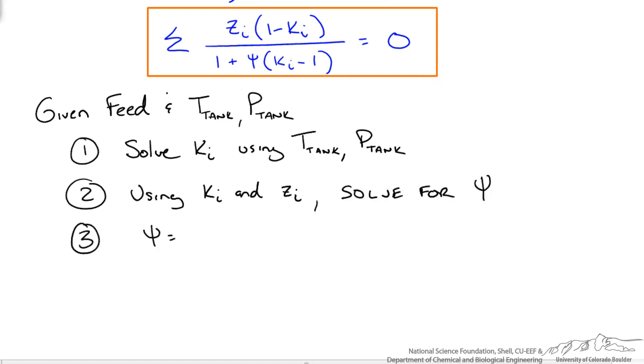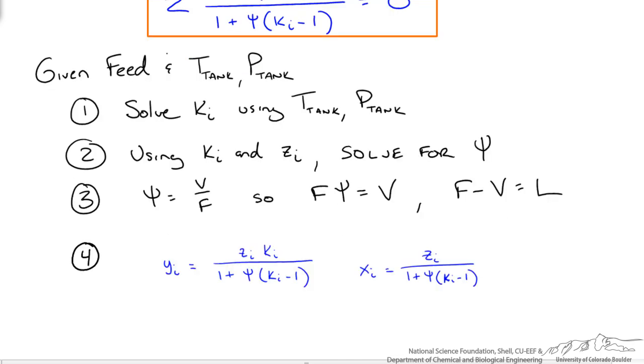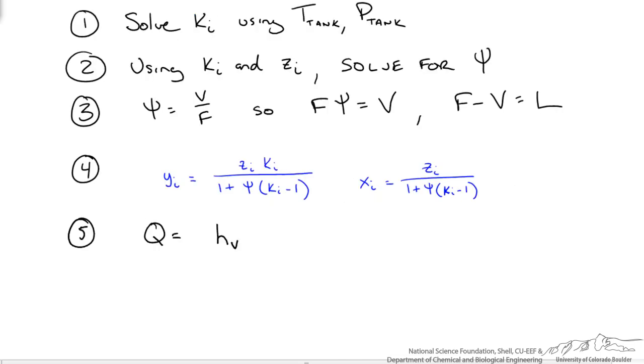Once we have psi, we know psi is equal to v over f. So f times psi gives us our vapor stream. f minus our vapor stream gives us our liquid stream. We go back to our y and x mole fractions. We solve those using the information we have already found.